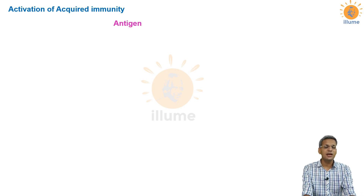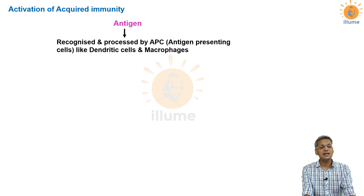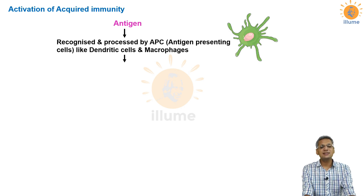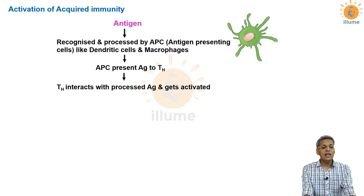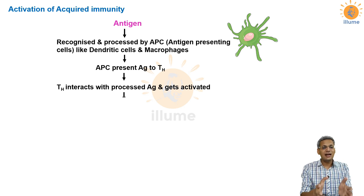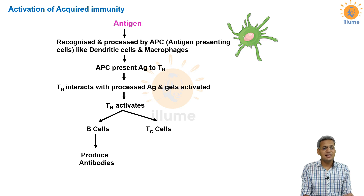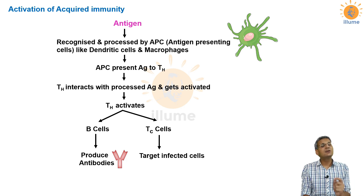Now a very important topic: activation of acquired immunity. When an antigen enters the body, APCs (dendritic cells and macrophages) recognize, process, and present the antigen to T helper cells. T helper cells interact with the antigen and get activated. Activation of T helper cells then leads to activation of B cells and cytotoxic T cells. Activated B cells form antibodies against the antigen, and activated TC cells directly target infected cells.